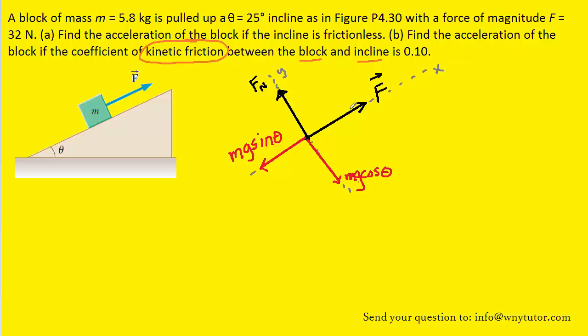Because the block is being dragged up the ramp, the kinetic frictional force will point opposite to that direction down the ramp. So we're going to add a force that's acting down the ramp. We've labeled that force F sub K, which simply stands for the kinetic frictional force.